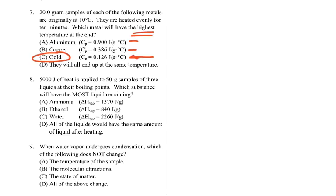Number 8: 5,000 joules of heat is applied to 50-gram samples of three liquids at their boiling points. Which substance will have the most liquid remaining? The heat of vaporization tells how much the substance resists a change in phase. We want the one that resists the most — the one with the value of 2,000 — so water would be the one with the most liquid remaining.